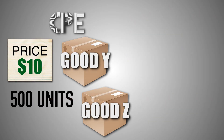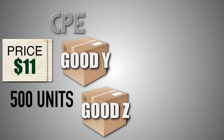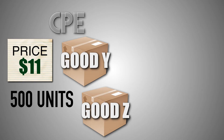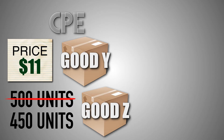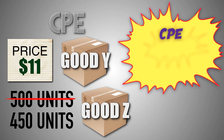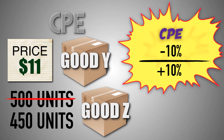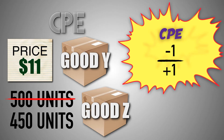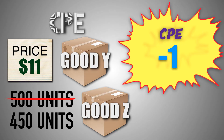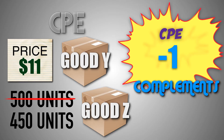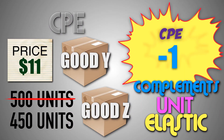Now suppose that the price of good Y increases from $10 to $11, and the demand for good Z decreases from 500 units to 450 units. When the price of good Y jumped by 10%, consumers decrease their consumption of good Z by 10%. This gives us a cross-price elasticity coefficient of negative 1, which means that good Y and good Z are complementary goods, and the demand between good Y and good Z is cross-price unit elastic.